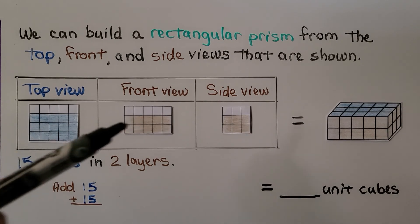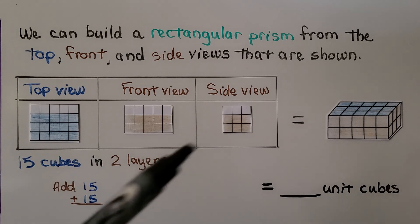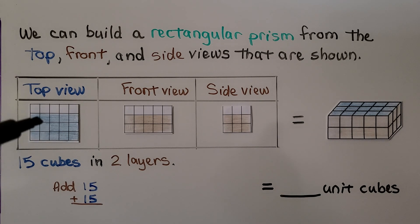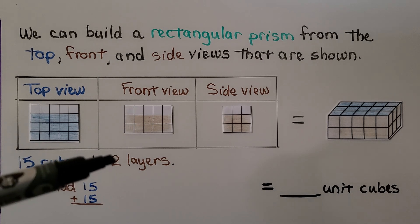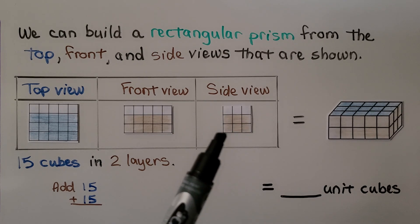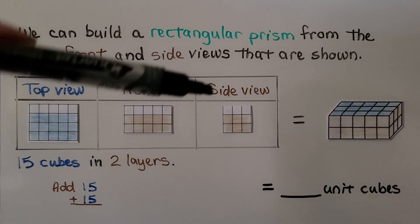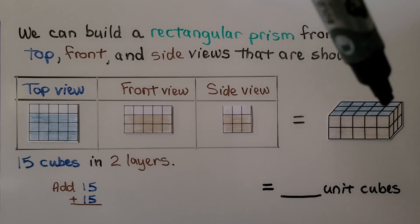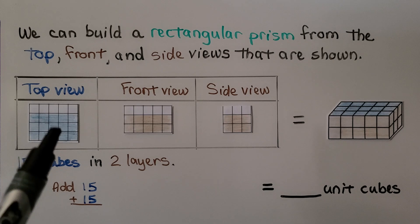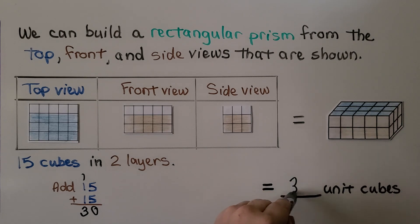Here the top view and the front view are different. We can build a rectangular prism from the top, front, and side views that are shown. The top view has fifteen cubes — five, ten, fifteen. The front view shows two layers, and the side view is also showing two layers and three rows. We have fifteen cubes in two layers, so we add fifteen plus fifteen — that's thirty unit cubes.